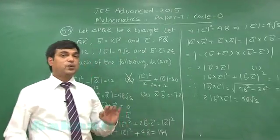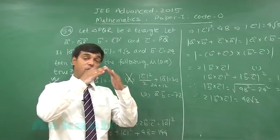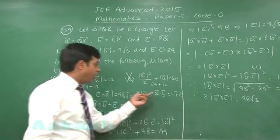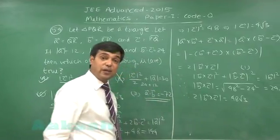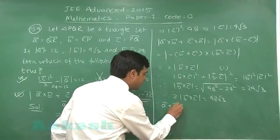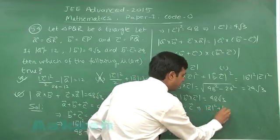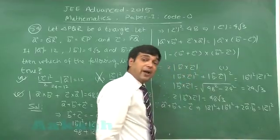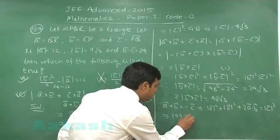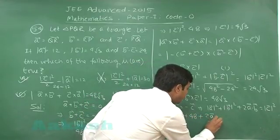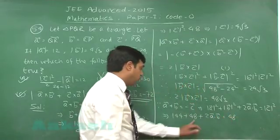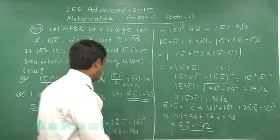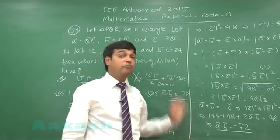For option d, we need a·b. From a + b = −c, taking the dot product: |a|² + |b|² + 2(a·b) = |c|². Substituting: 144 + 48 + 2(a·b) = 48. This gives 2(a·b) = 48 − 192 = −144, so a·b = −72. Option d is also correct. In this manner, we can solve this vectors question.